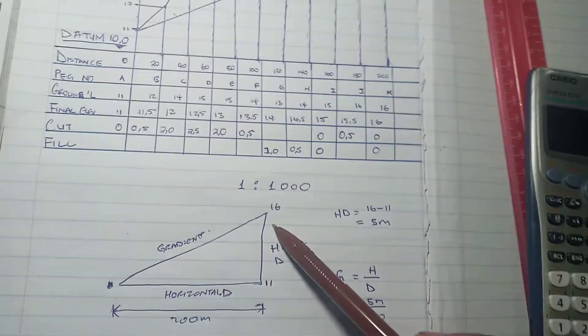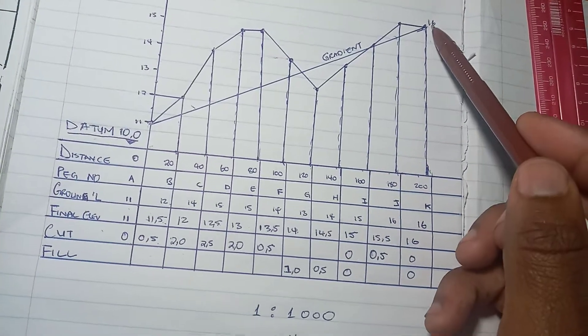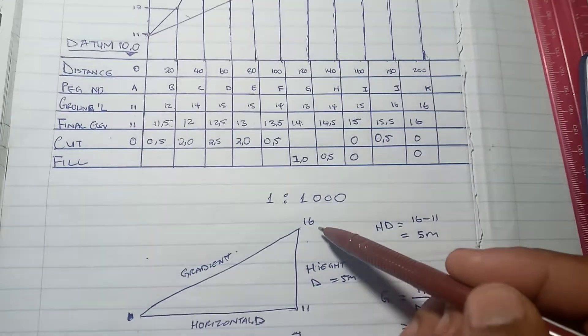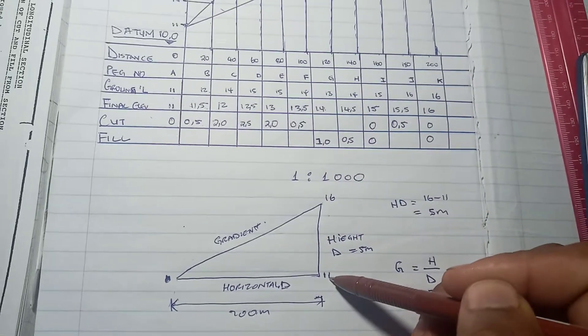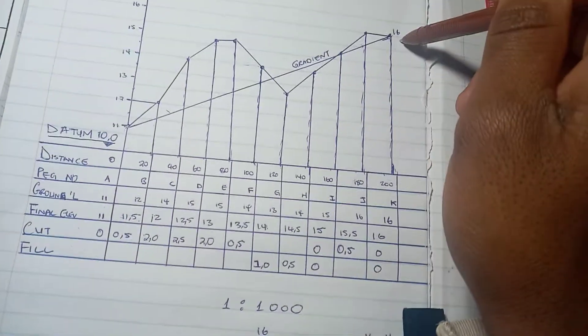This is 16, that is the highest point. This point down here is 11. Now we're going to put our 16 here and 11 here.